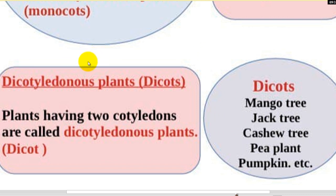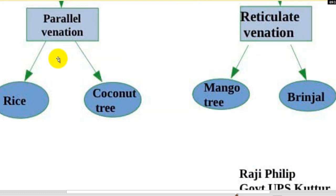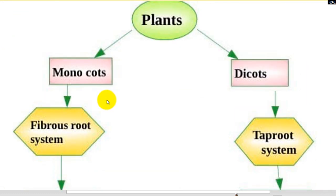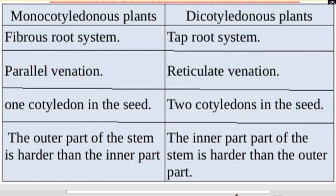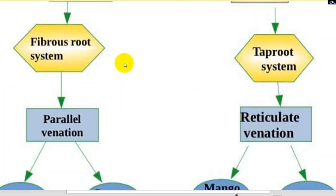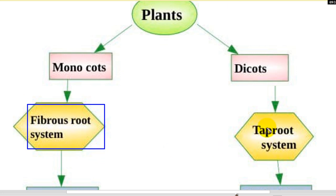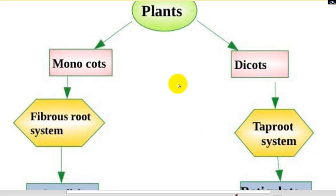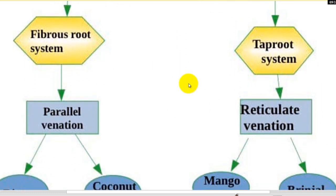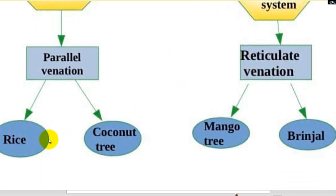Okay, in this class we have two definitions and examples. If you have a diagram, you can complete it. Plants — first, monocots and dicots. Then, fibrous root system and taproot system. This is parallel venation and reticulate venation. Find a few examples.